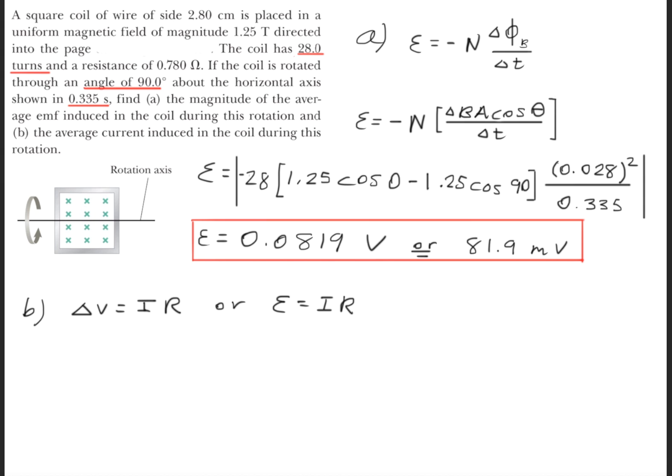Now for part B, we're going to use Ohm's law, which is delta V equals IR. Or we could substitute that delta V and we can use the EMF because the EMF is also a voltage. So we can say the EMF is equal to the current times the resistance.